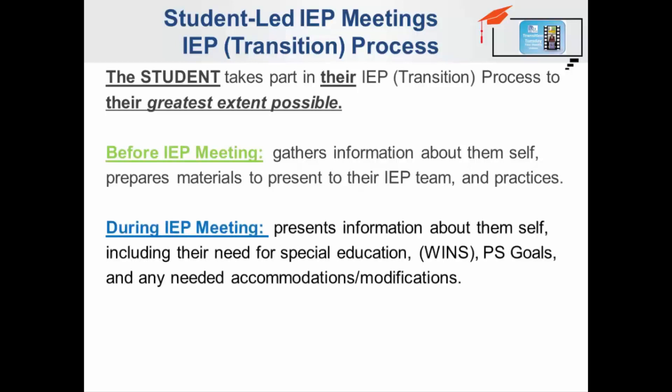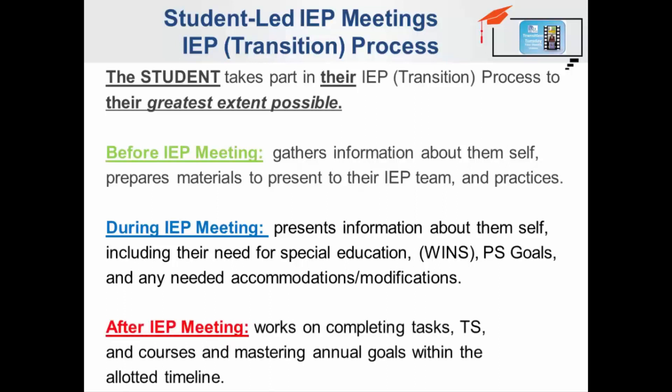During the IEP meeting, the student presents information about themselves, including their need for special education, their WINS — which are their wants, interests, needs, and strengths — their post-secondary goals, and any accommodations or modifications they might need. After the IEP meeting, the student works on completing tasks, transition services and courses, and mastering annual goals within the allotted timeline.